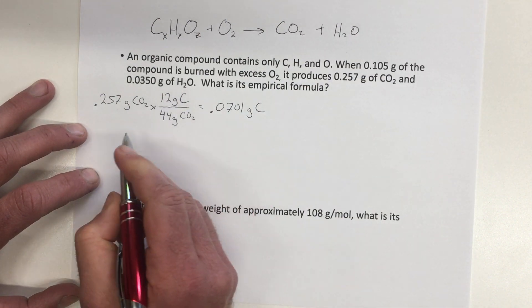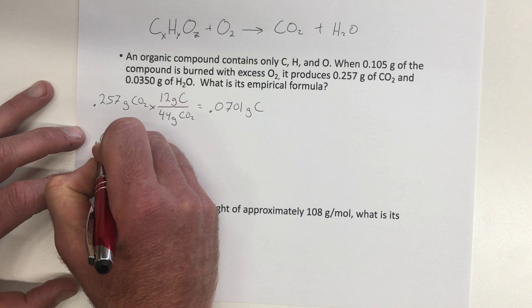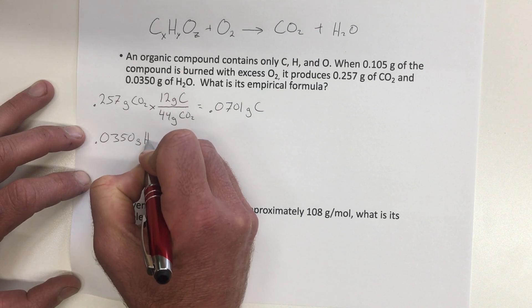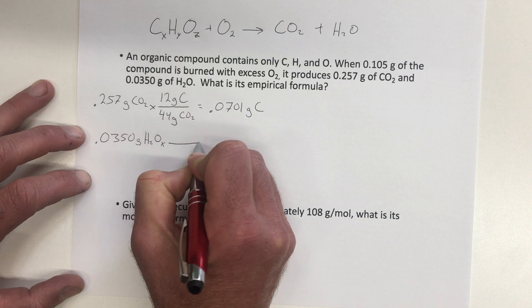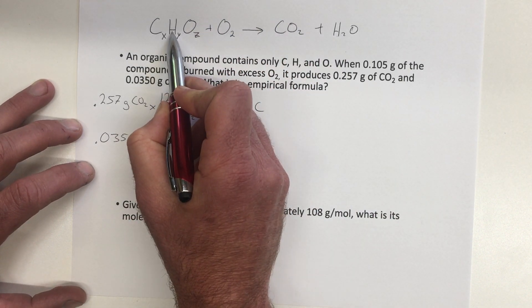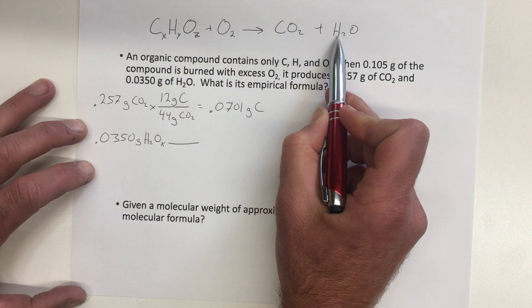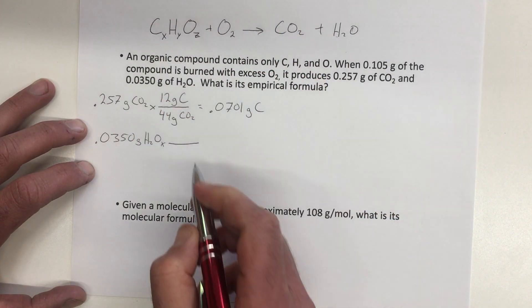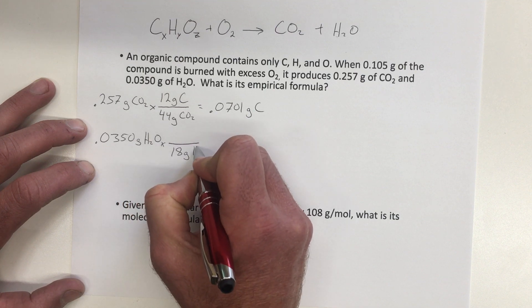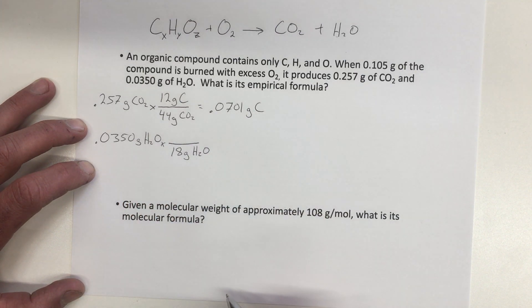We'll also look at how much water was produced, so 0.0350 grams of H2O were produced. And so from that, we can figure out how much hydrogen was in our original compound, because all the hydrogen that ended up here had to be here originally. So the molar mass of water is 18 grams of H2O per every mole.